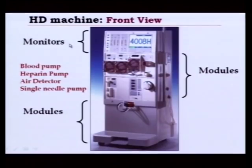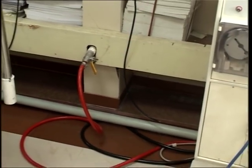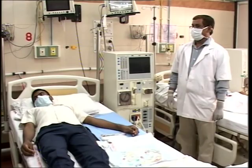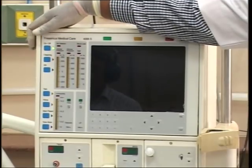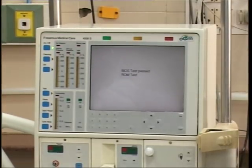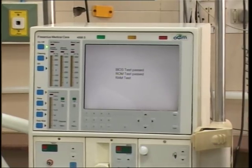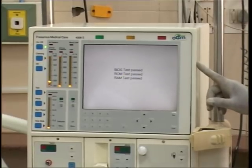Before switching on the machine, ensure that the machine is connected to the water inlet line. Switch on the machine by pressing the on/off switch, usually located on the upper left corner of the machine. The front panel of the machine usually has a screen controlling the various functions of the machine.